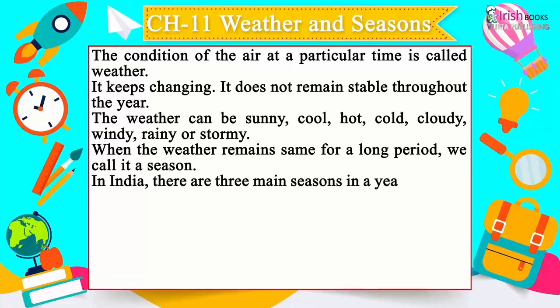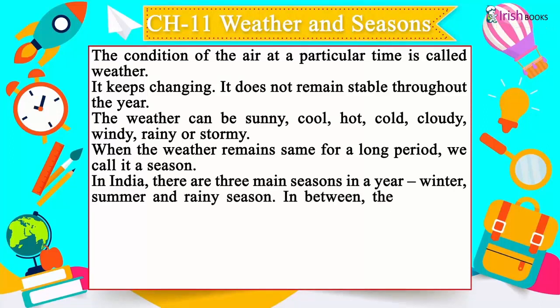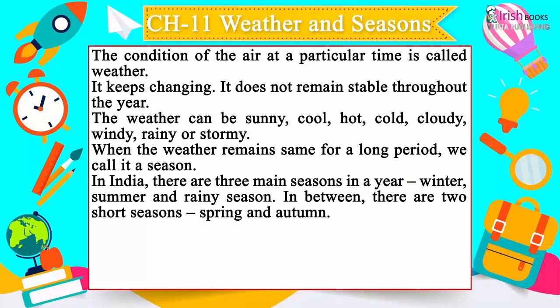When the weather remains the same for a long period, we call it a season. In India, there are three main seasons in a year: winter, summer, and rainy season. In between, there are two short seasons — spring and autumn.